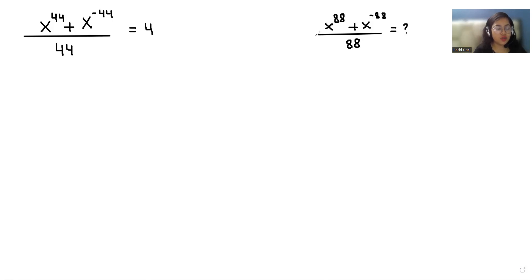My name is Ashi Goyan and in this video we are going to solve x power 44 plus x power minus 44 divided by 44 equals 4, and we have to find the value of x power 88 plus x power minus 88 divided by 88.